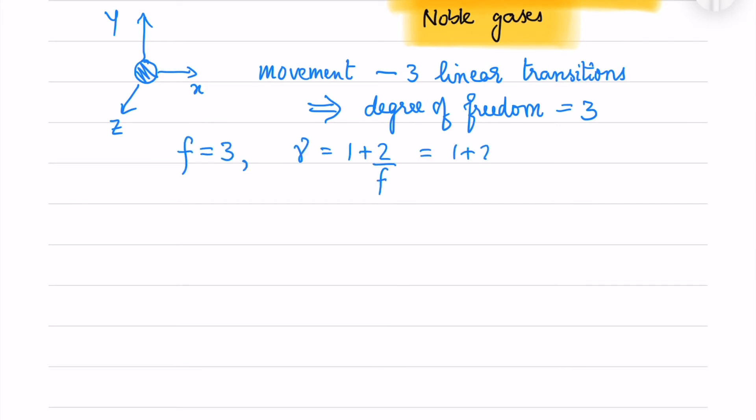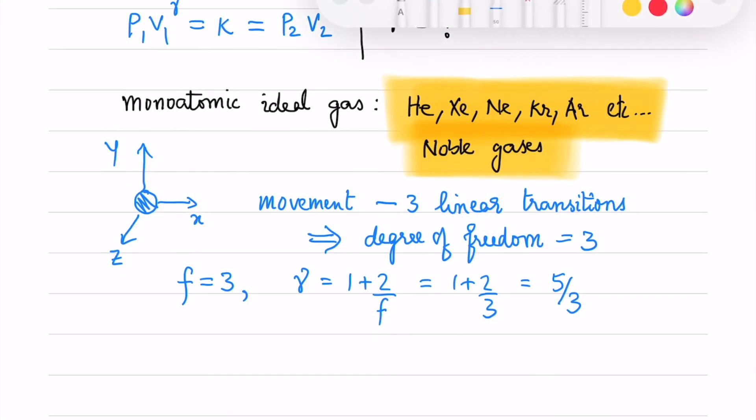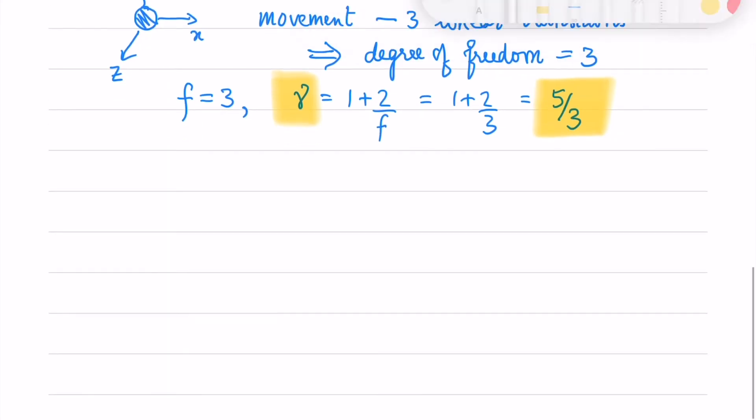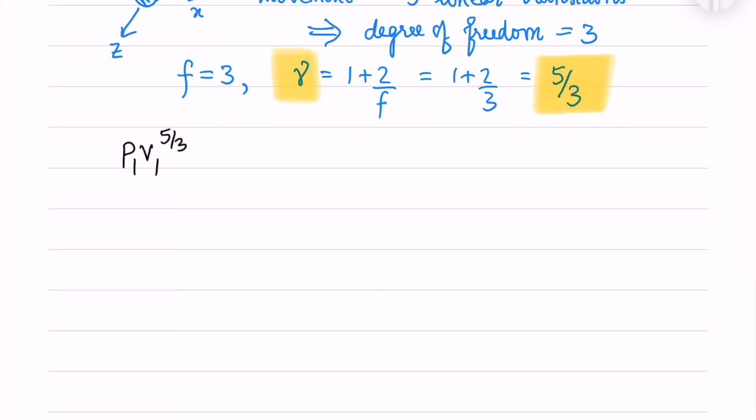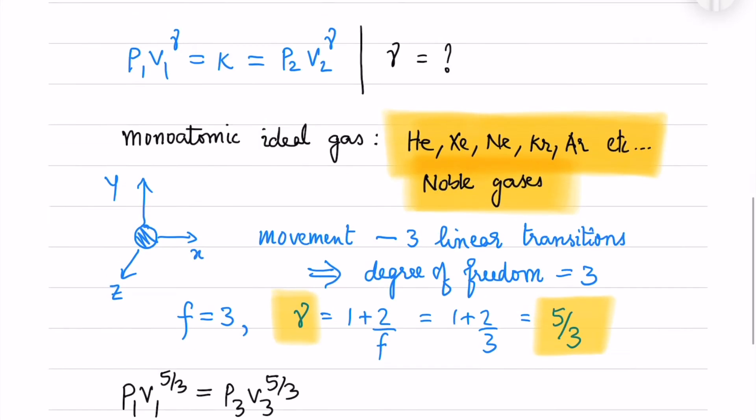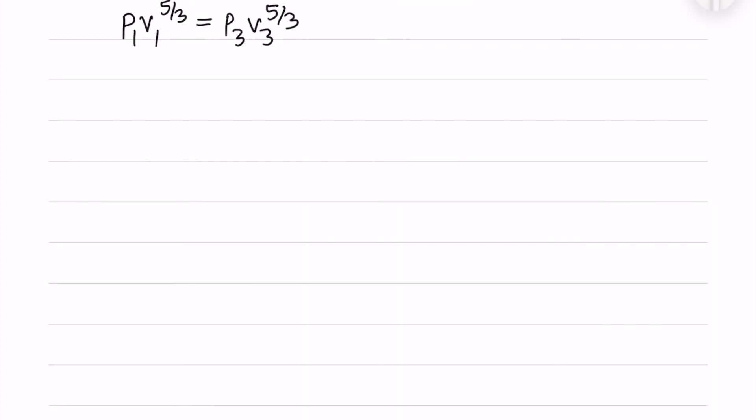So gamma is 1 plus 2 by degree of freedom which is 5 by 3 for the monoatomic gas. Now we will use that equation to get the volume V, 1.52 liters.